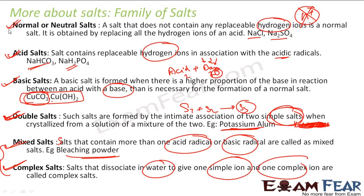So we have different types of salt. Based on acidity and basicity, we have acidic, basic, and neutral salts. Based on formation and composition, we have double salts, mixed salts, and complex salts.